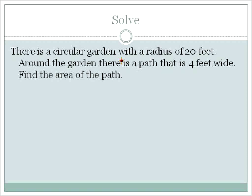The next question says, if I have a circular garden with a radius of 20 feet, around the garden there is a path that is four feet wide. And I need to find the area of the path. So I need to find the area of just this gray path around the outside of the green garden.